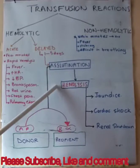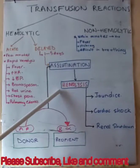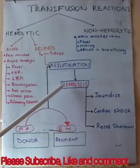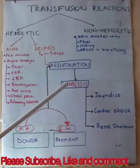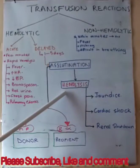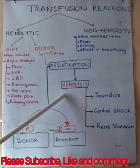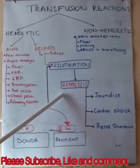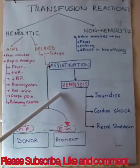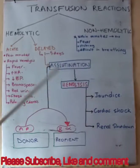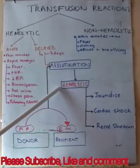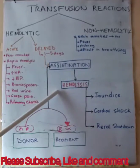The globin portion consists of proteins that are further degraded into amino acids and used for other purposes in the body. Heme, on the other hand, has two pathways: it releases iron, which can be carried by transferrin and stored as hemosiderin.